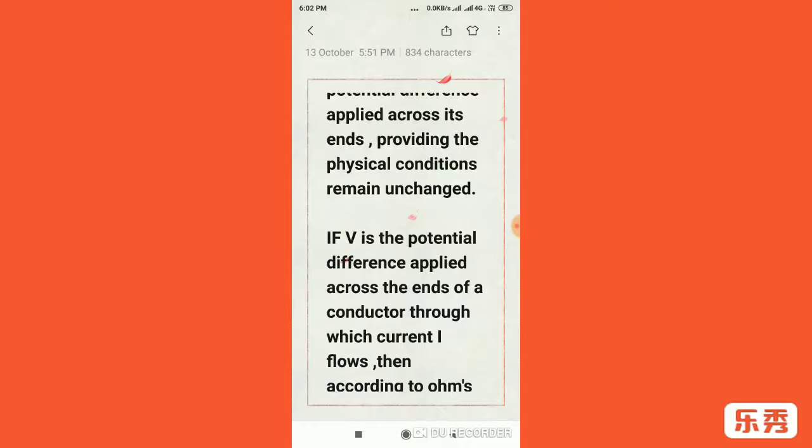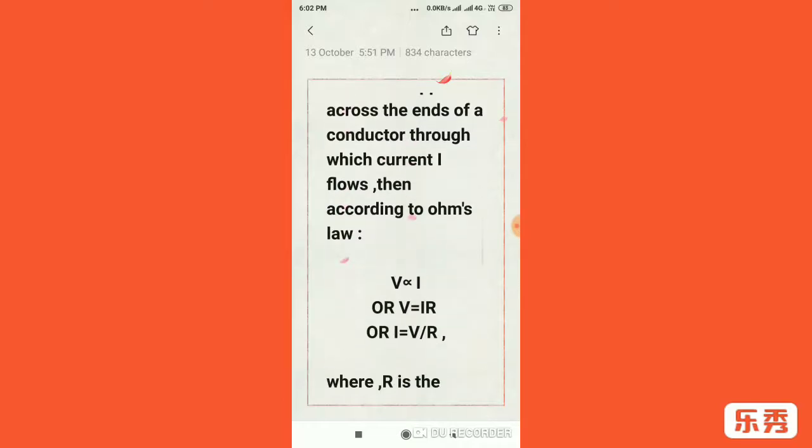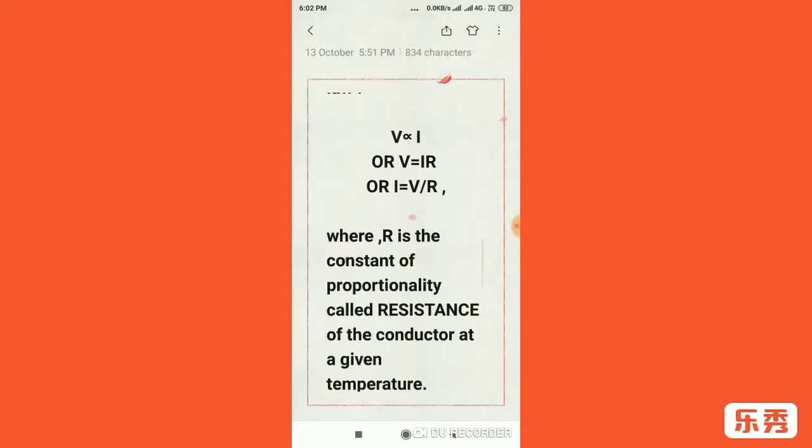If V is the potential difference and I is the current which flows through the conductor, then according to Ohm's law V is directly proportional to I, or V equals IR, or I equals V/R, where R is the constant of proportionality called resistance of the conductor at a given temperature.